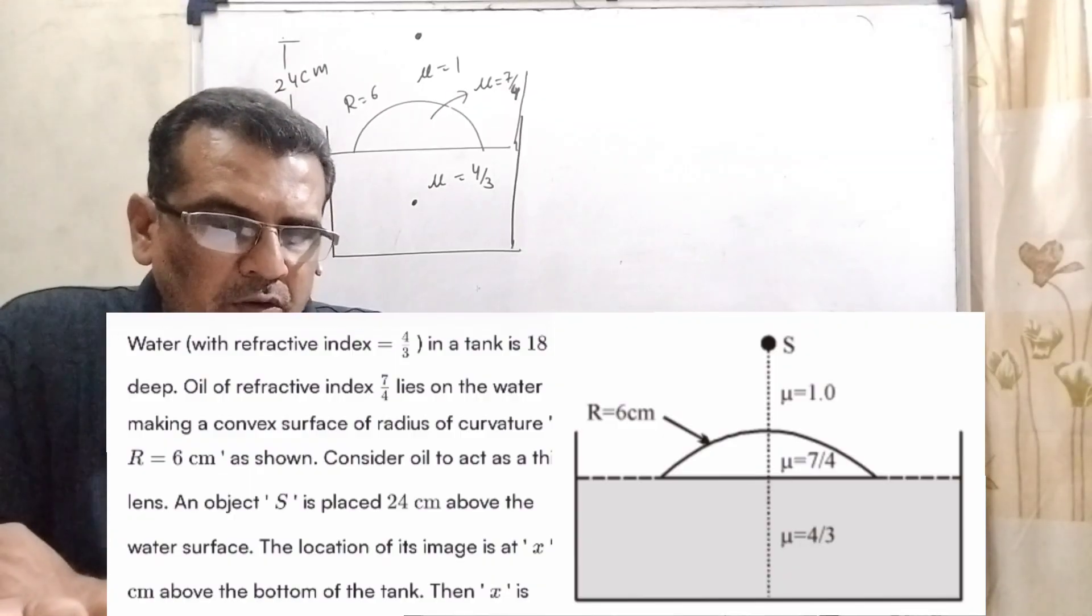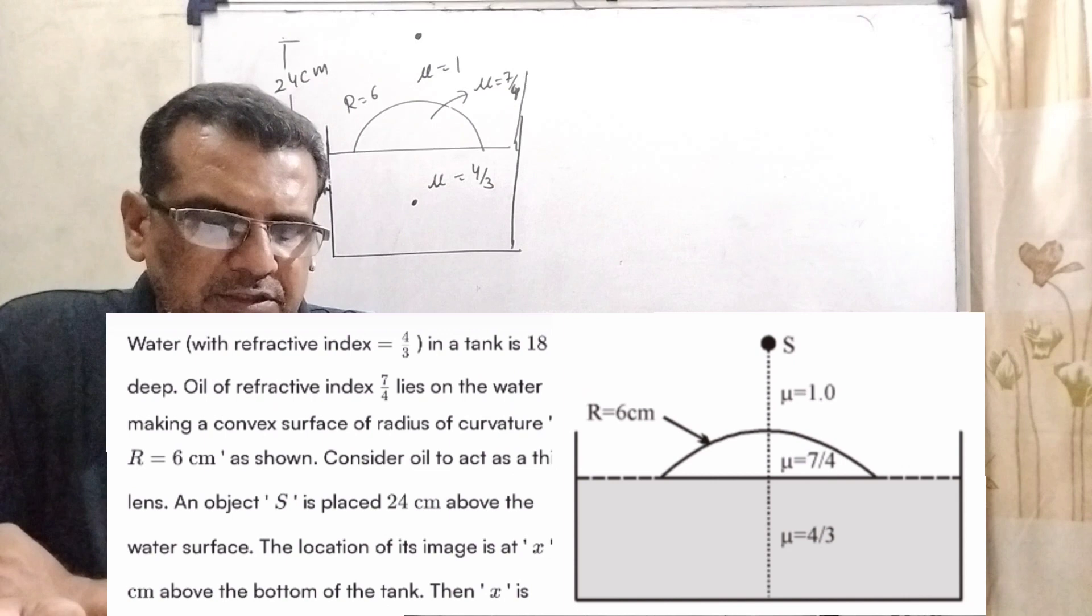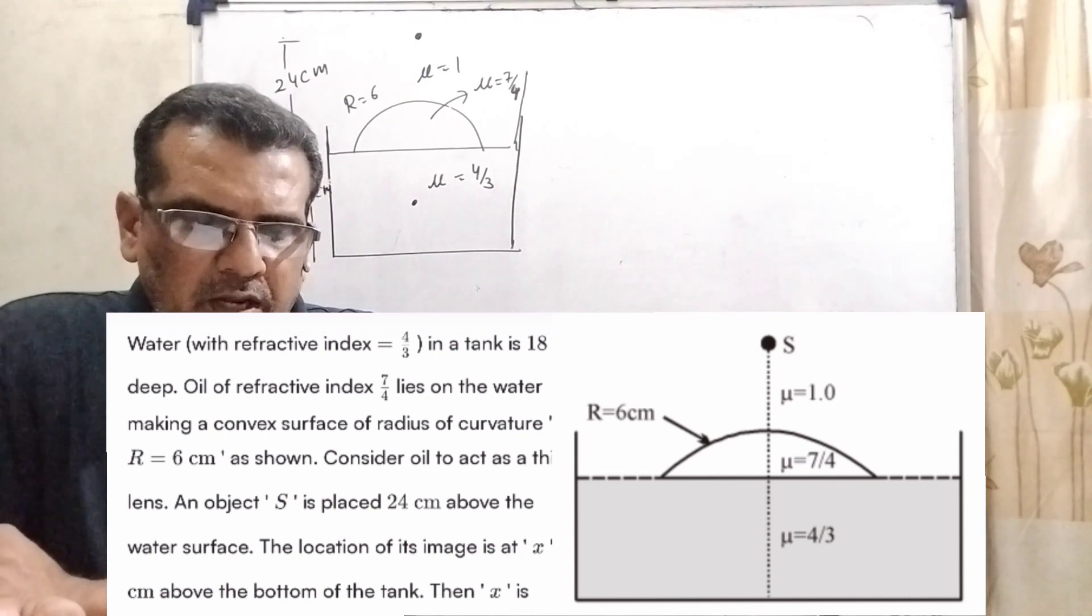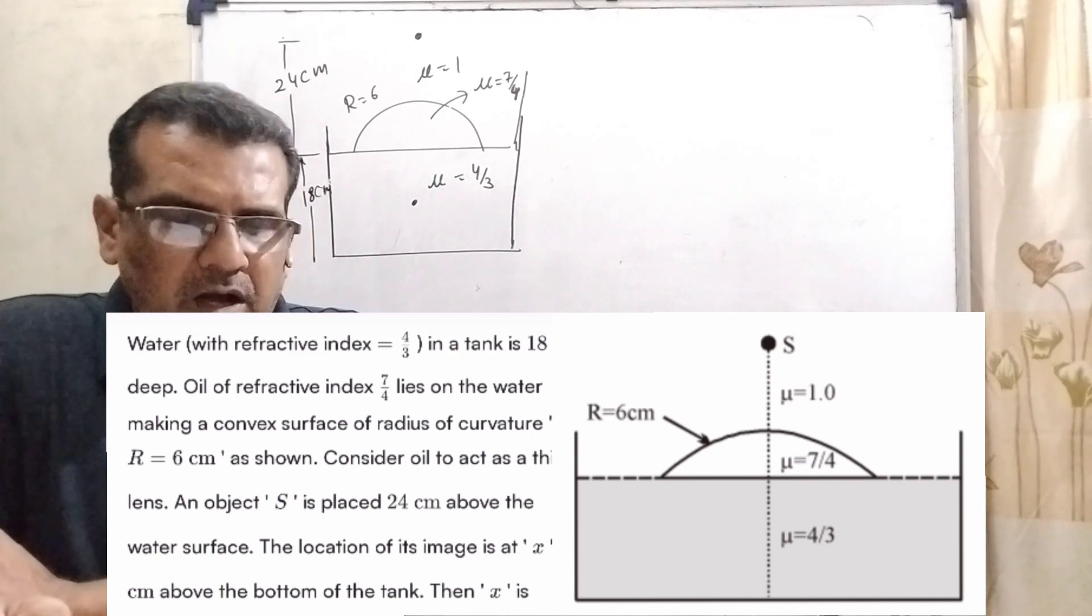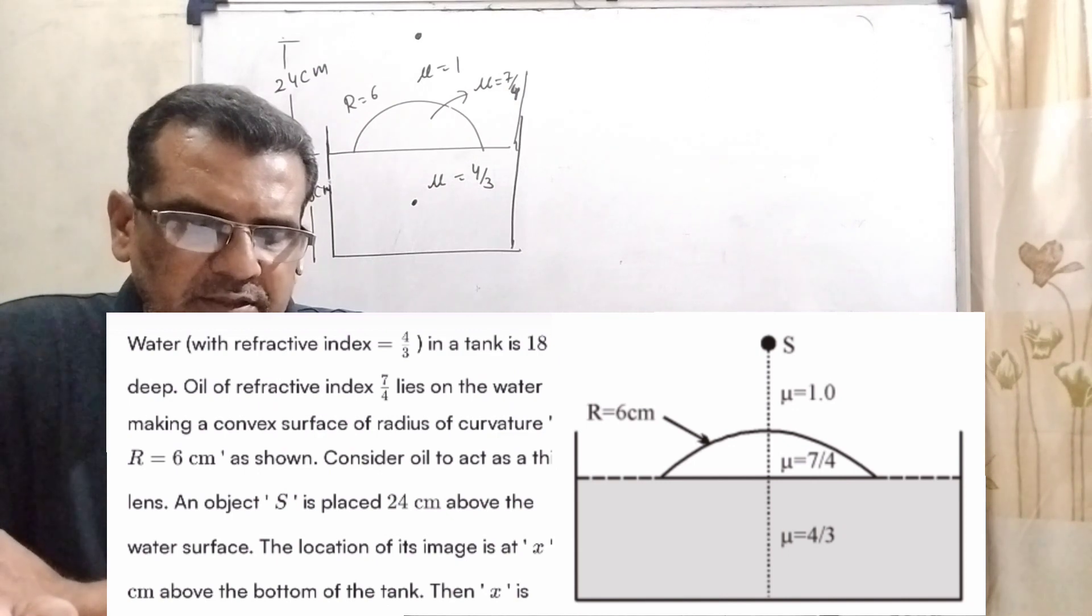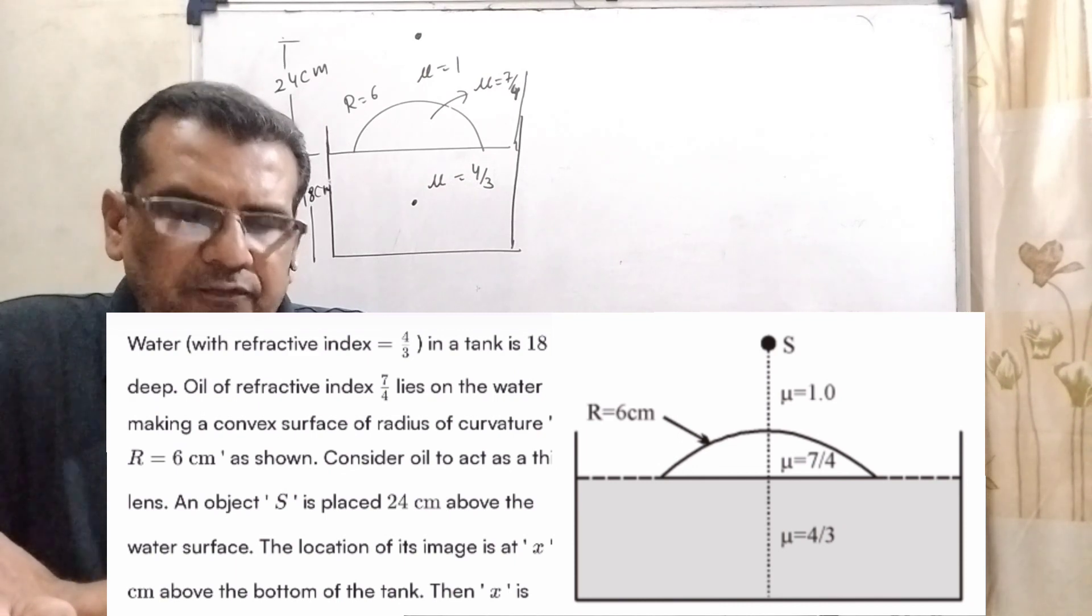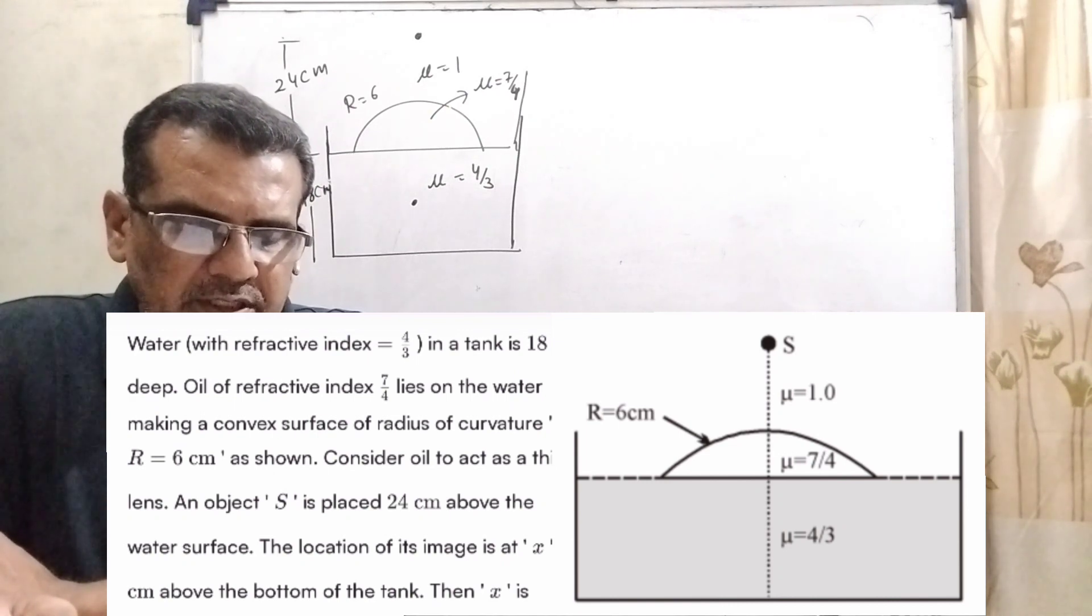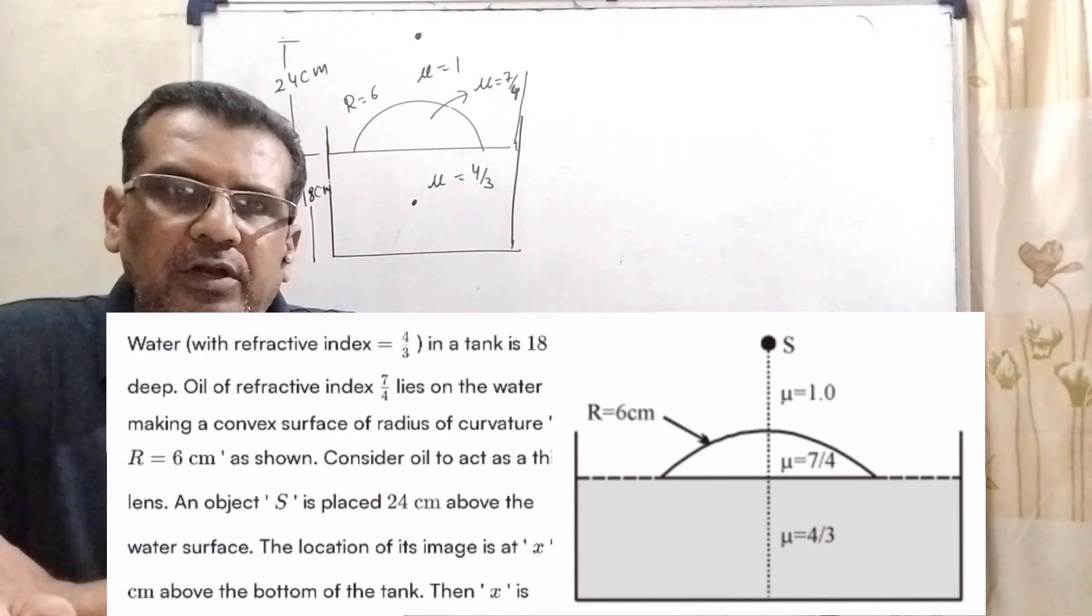Now here is the question. Water with refractive index 4 by 3 in a tank is 18 cm deep. Oil of refractive index 7 by 4 lies on water making a convex surface of radius of curvature R equal to 6 cm. As shown, consider oil to act as a thin lens. An object S is placed 24 cm above water surface. The location of its image is at x cm above the bottom of the tank. Then find the value of x.